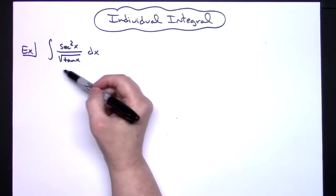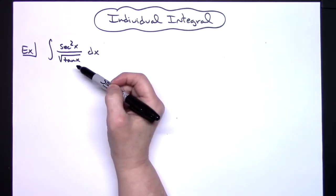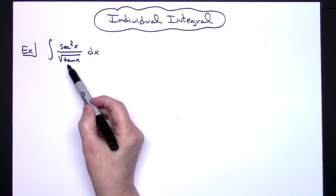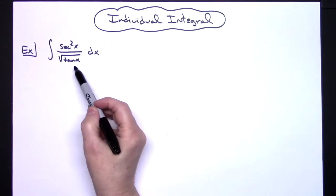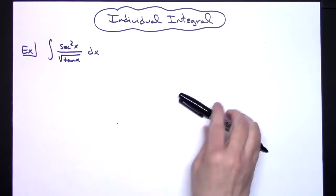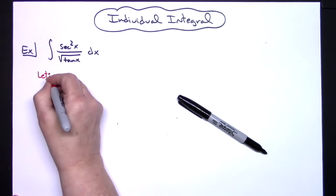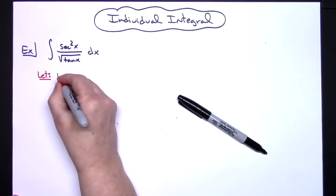So the first thing I'm going to do is I'm going to come over here and look at this integral and try to figure out what I'm going to let u be. Thinking ahead about what my derivatives are, the derivative of tangent is secant squared. So a good place to start would be letting u equal tangent x.